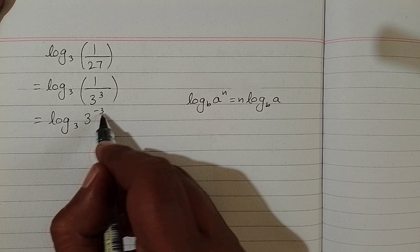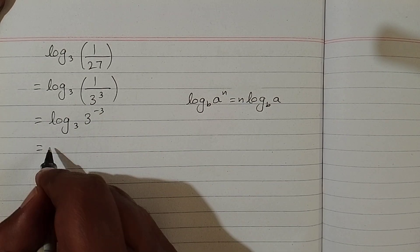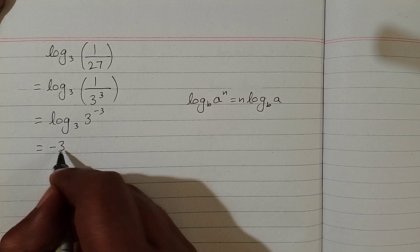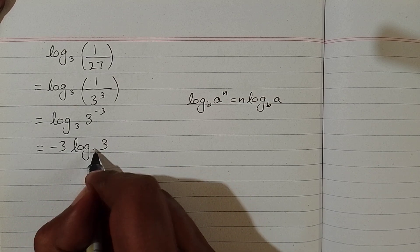Here we have minus 3 as a power of this number, so this minus 3 can be written before the log. We have minus 3 times log of 3 to the base 3.